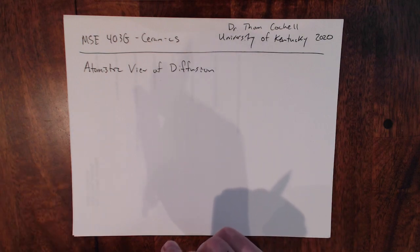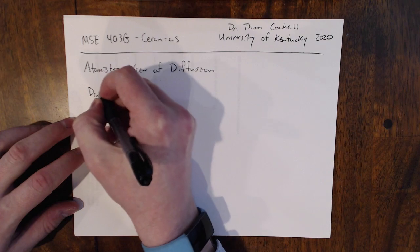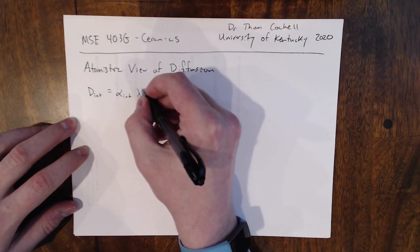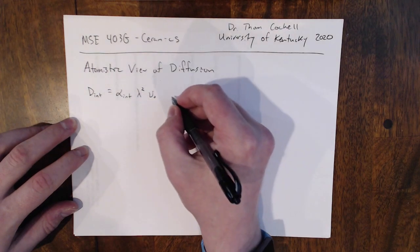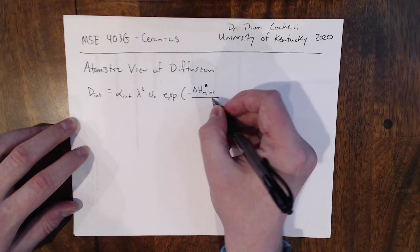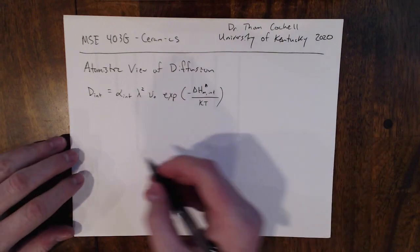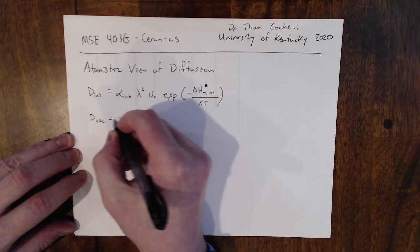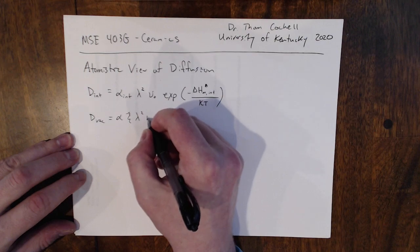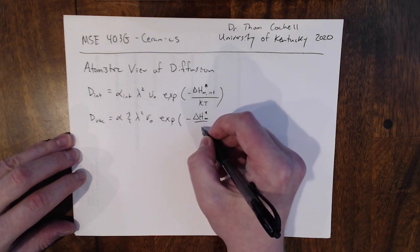Let's go ahead and show the diffusivity equations that we came up with last time. We have the diffusivity of interstitials: D_int is equal to alpha_int, lambda squared, nu naught, and then the exponential of the enthalpy of migration for interstitials over kT. We also came up with an expression for vacancy diffusivity, again having alpha, xi, lambda squared, nu naught, and then the exponential of a similar migration term over kT.